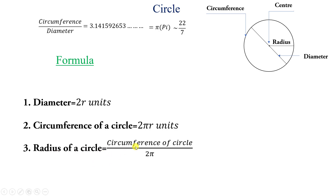The radius of a circle equals circumference divided by 2 pi. So if you know the circumference, divide by 2 pi to get the radius. And from the radius you can easily find the diameter. You have to remember these formulas — they make problem solving easy.